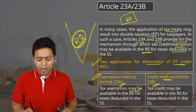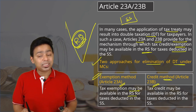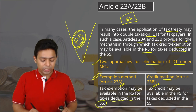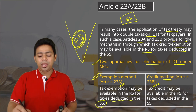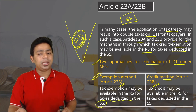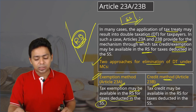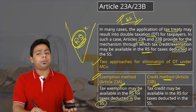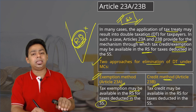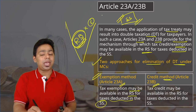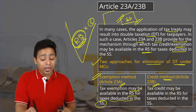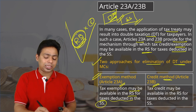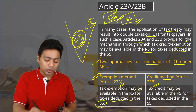Under the exemption method, tax exemption may be available to the resident state for taxes deducted in the source state — meaning once the income is taxed in the source state, the same income will not become taxable again in the resident state. There will be a specific exemption provided in the DTAA; according to domestic law it would be taxable, but due to this article it will become exempted.